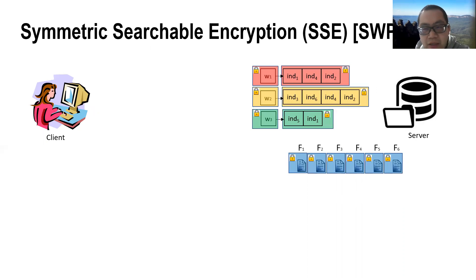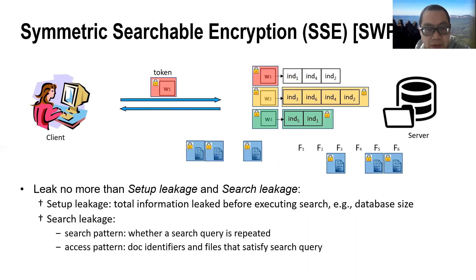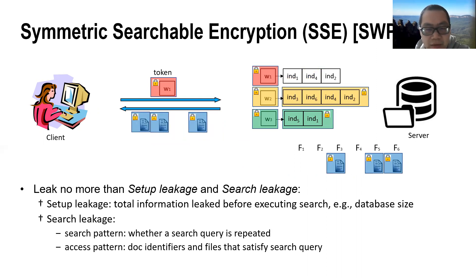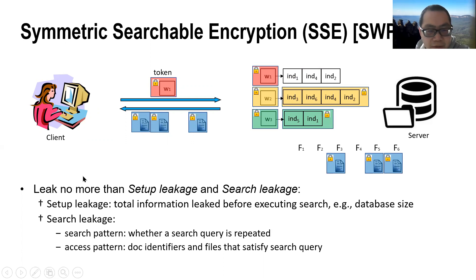Symmetric searchable encryption, SSE for short, enables the client to encrypt her data in a way such that the encrypted data can be searched by the server while not sacrificing the data and query privacy. To achieve efficiency, it is usually allowed to leak some information, but no more than the setup leakage and search leakage. The setup leakage is the total information leaked before executing a search, such as the database size.